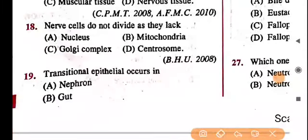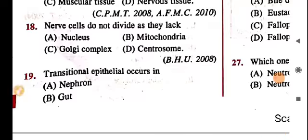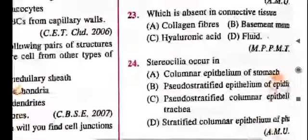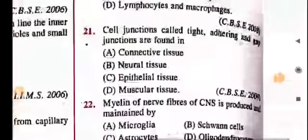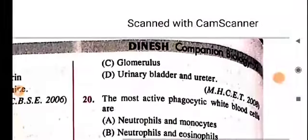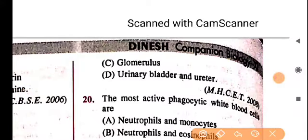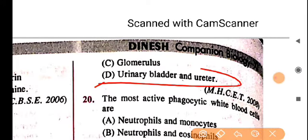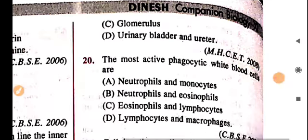Transitional epithelium is not in the current syllabus, but it is a part of the urinary bladder — option D.